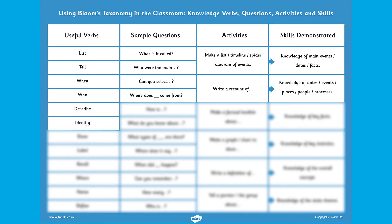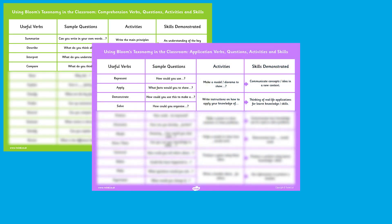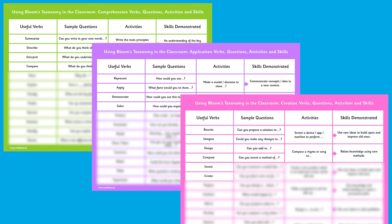So for example, if you're learning about properties of materials in science, in this first stage of finding out what they already know, you might want your children to list materials that are shiny or dull, identify a material from how it feels, or describe a material to a partner. You could use a sample question like 'can you select', where children pick out an item from the properties described. What you find out in stage one would help you figure out what they already know and inform your future teaching of the topic. Then it's just a case of following the process from stage to stage using this sheet as a reference tool.